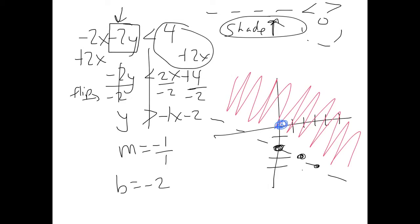Now for solutions: the blue dot at the origin is a solution; that blue dot is a solution. But dots on the line are not solutions — on the line, not a solution; on the line, not a solution. You cannot be on the line and be a solution with a dotted line. The STAR test knows kids have confusion with this, so they almost always put one or two dots on the line to see if you really know your inequalities.